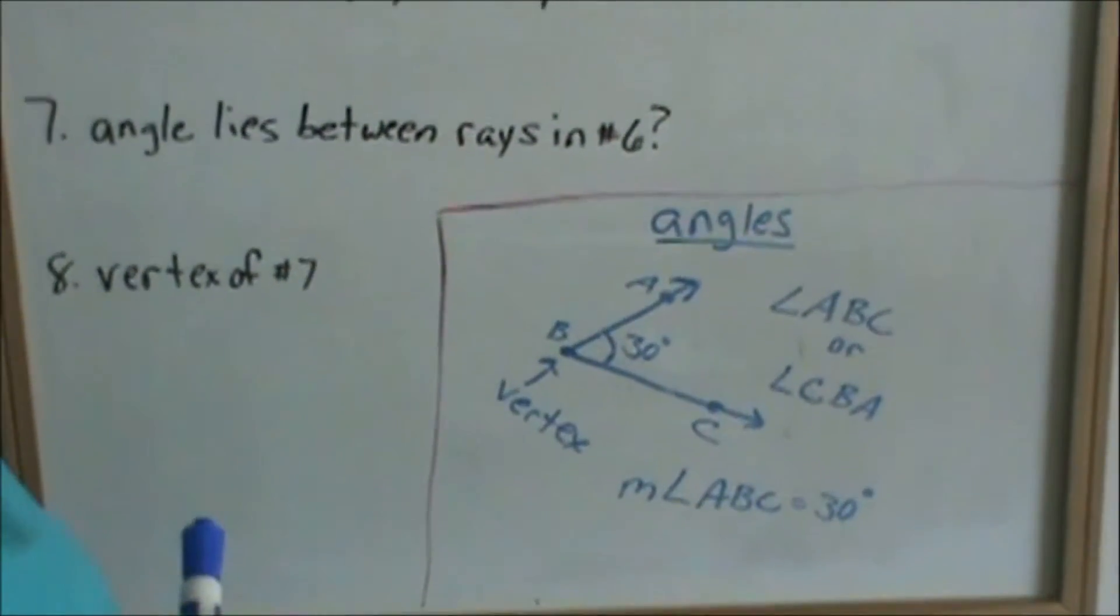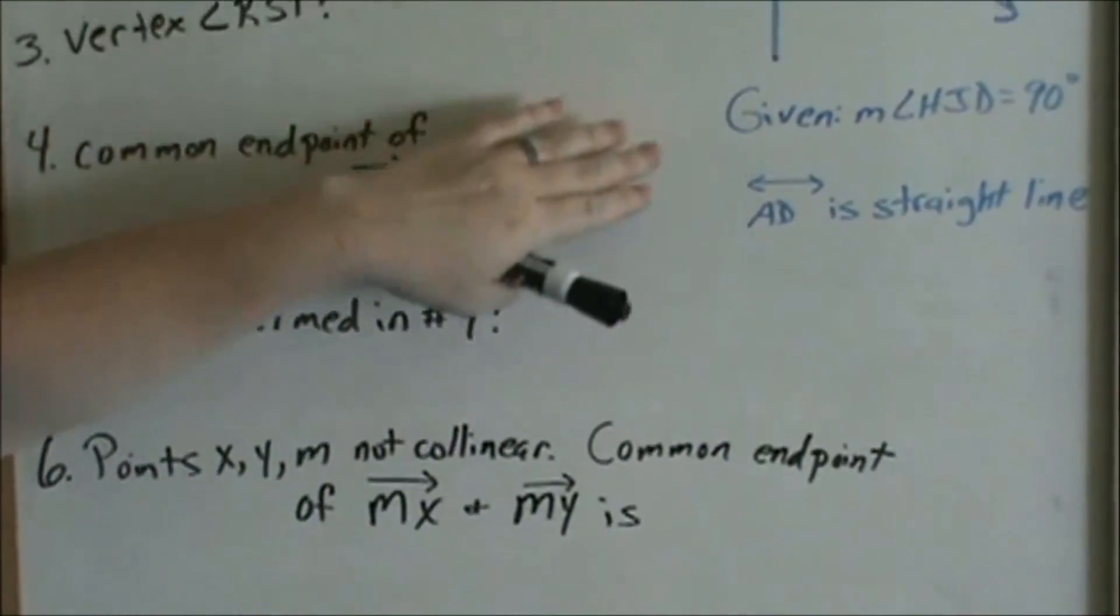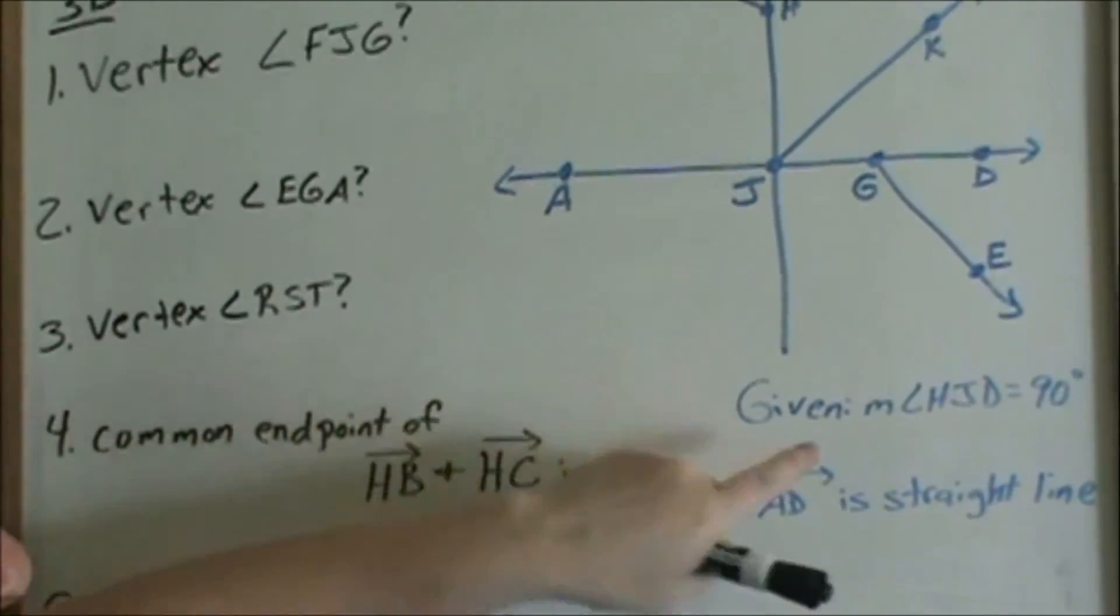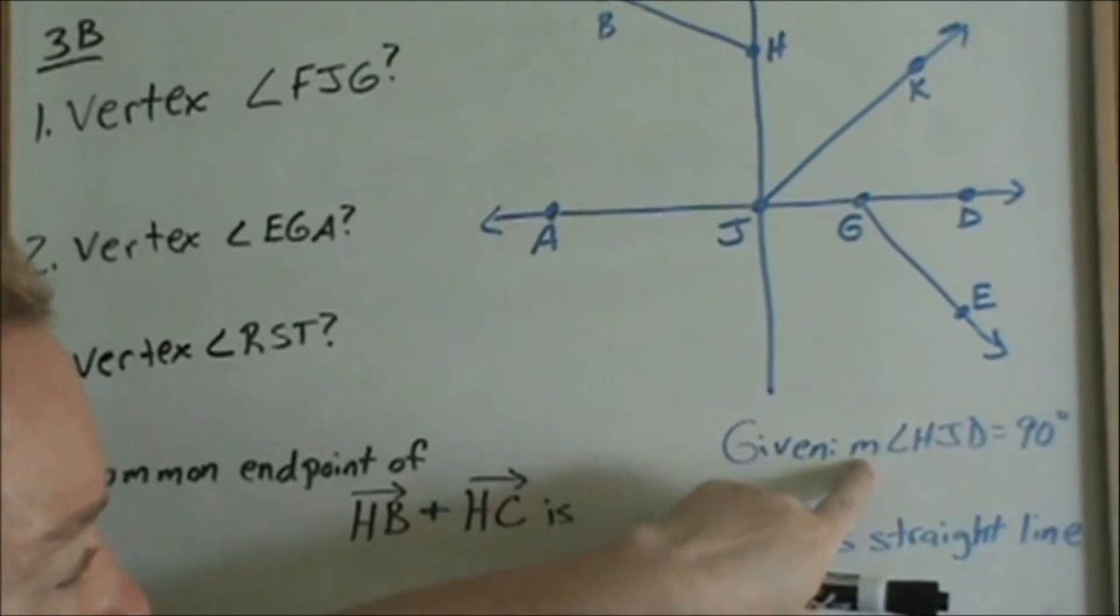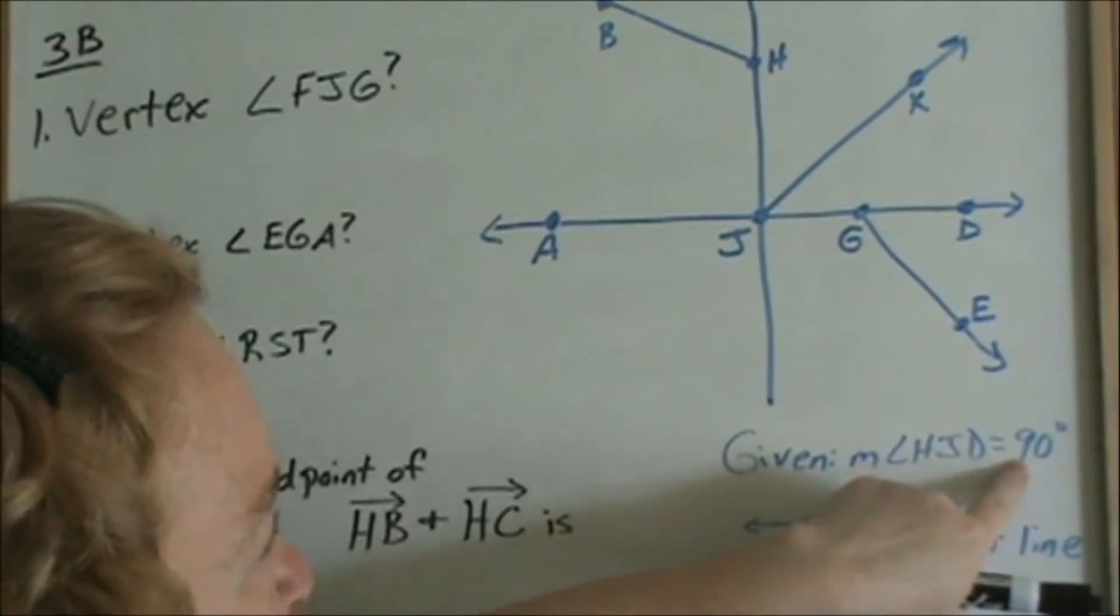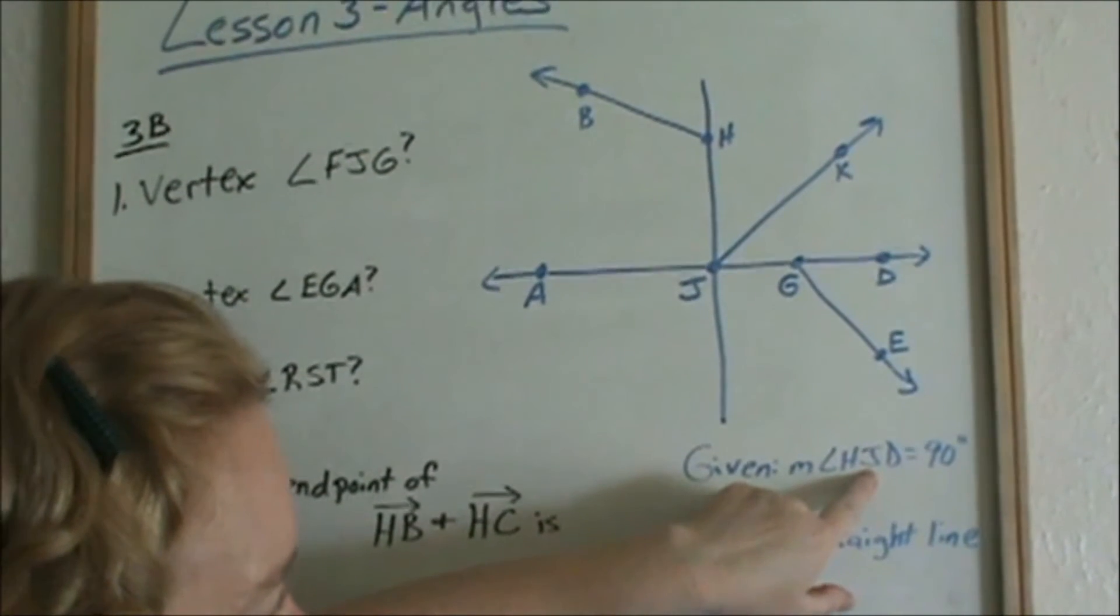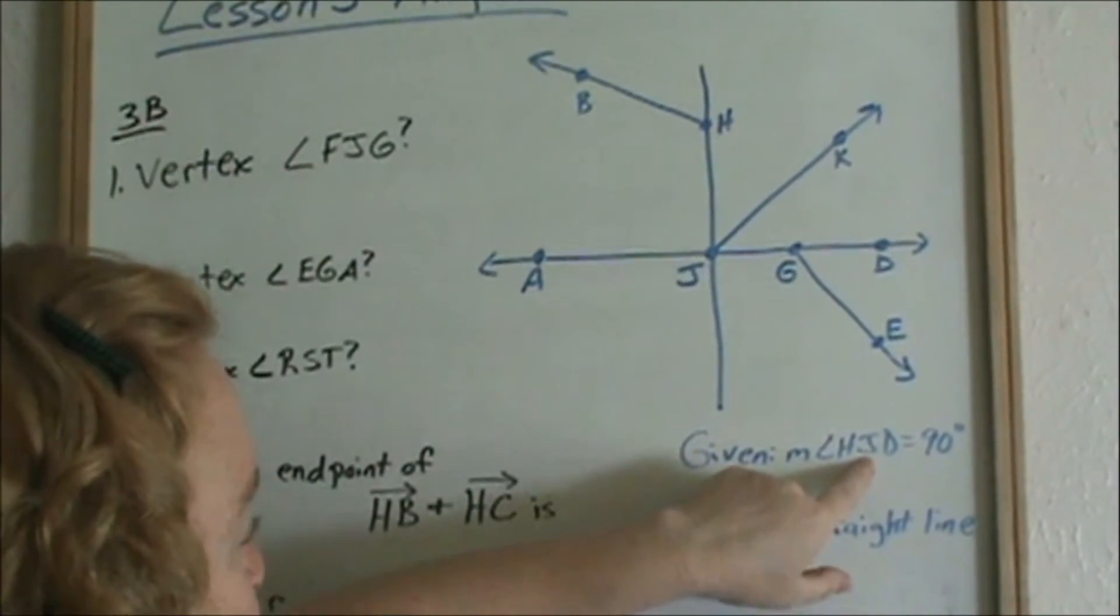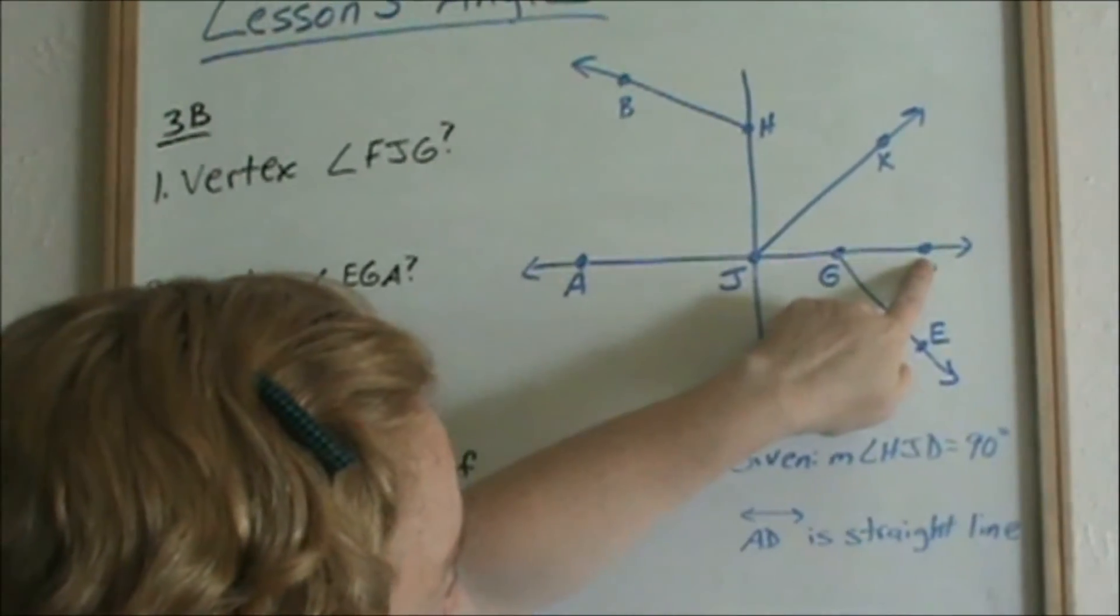I'm looking at 3B. You're given this figure, so always read the given. The first given, it says the measure. Remember the M in front of the angle symbol means measure. The measure of angle H, J, D is 90 degrees. So I'll go find H, J, D. Remember J is the vertex, so if I just follow it with my fingers, H, J, D is 90 degrees.